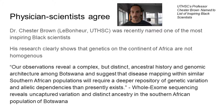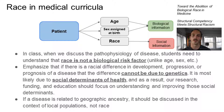Physician scientists agree. Dr. Chester Brown, recently named one of the most inspiring black scientists, shows in his research that genetics on the continent of Africa are not homogenous. He states in his abstract: 'Our observations reveal a complex but distinct ancestral history and genomic architecture among Botswana and suggest that disease mapping within similar southern African populations will require a deeper repository of genetic variation and allelic dependencies than presently exists.' In class, when we discuss the pathophysiology of disease, students need to understand that race is not a biological risk factor, unlike age and sex. If there is a racial difference in development, progression, or prognosis of a disease, that difference cannot be due to genetics — it is most likely due to social determinants of health.